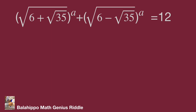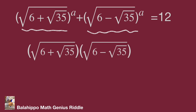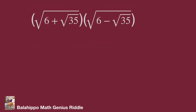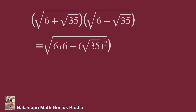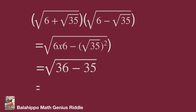In the given equation, we have two quantities raised to the power of a. I'm going to handle these two items. Due to the plus and minus in √6 + √35 and √6 − √35, if I multiply these two items, what will happen? (√6 + √35) multiplied by (√6 − √35) becomes √(6×6 − (√35)²), which equals √(36 − 35), equal to √1.